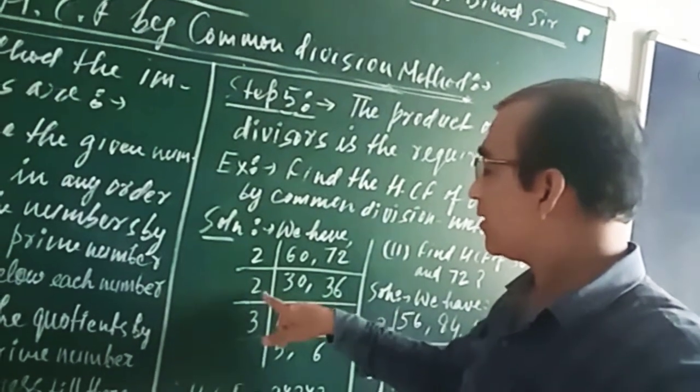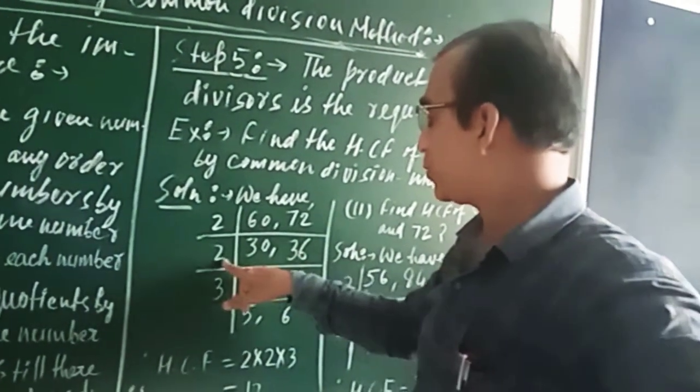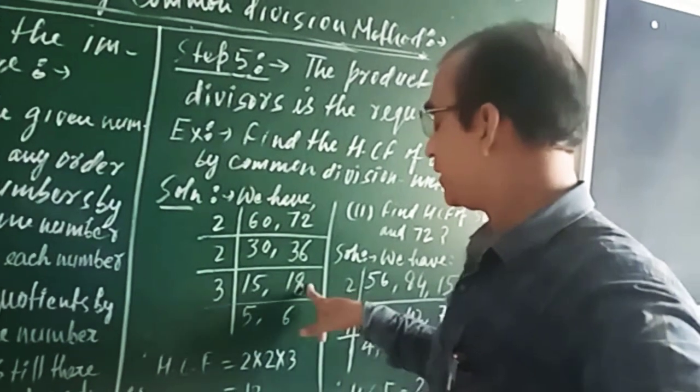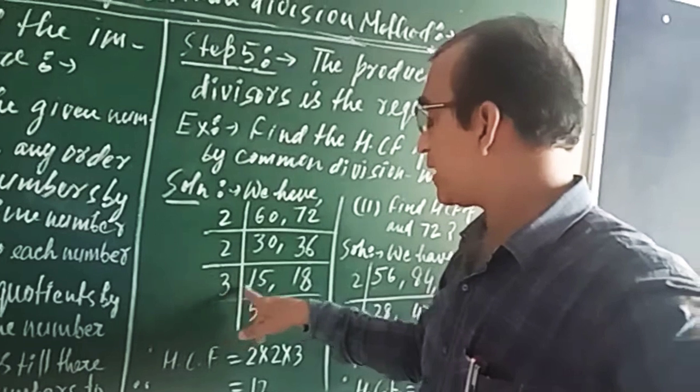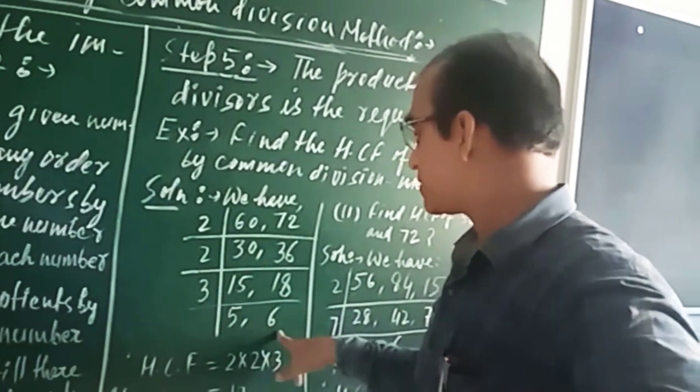Again the common factor is 2. So divide 30 and 36 by 2, we will get 15 and 18. Now the common factor of 15 and 18 is 3. So divide 15 and 18 by 3, we will get 5 and 6.